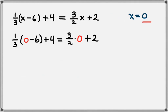And now let's evaluate both sides and see if they really are equal. On the left-hand side, we'll get 1 third times negative 6 plus 4. And on the right-hand side, we have 3 halves times 0. That's just 0 plus 2. So that leaves us with 2.